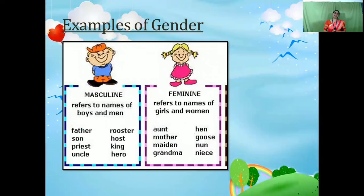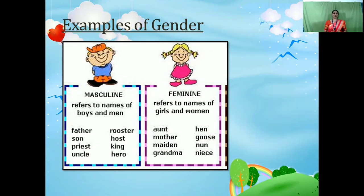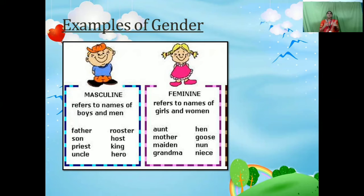Here we have some examples. Masculine gender refers to the names of boys or men. For example, father, rooster, son, horse, priest, king, uncle, hero. These are some nouns which refer to boys or men.